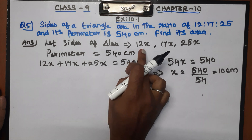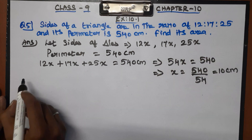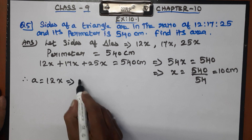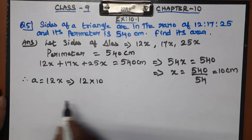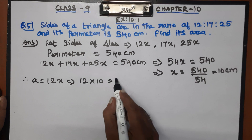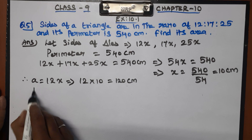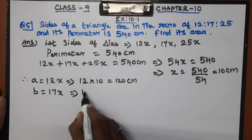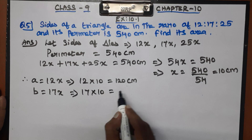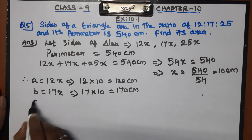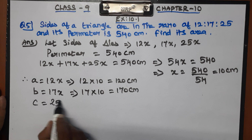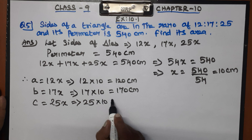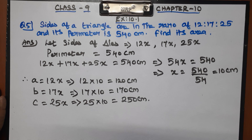Now that x is 10 cm, we can find the sides a, b, and c. Therefore, a is equal to 12x = 12 into 10 = 120 cm. Next, b is equal to 17x = 17 into 10 = 170 cm. Next, c is equal to 25x = 25 into 10 = 250 cm.